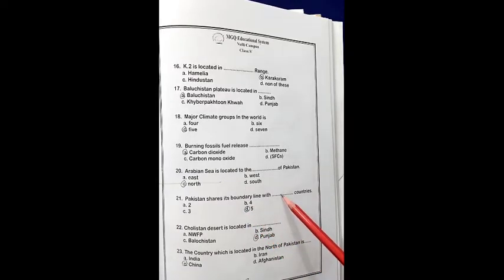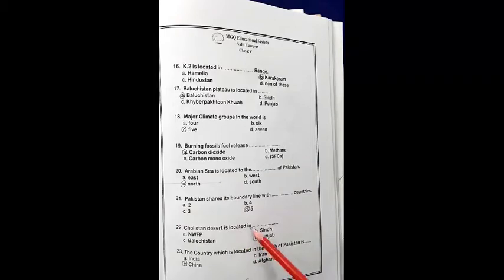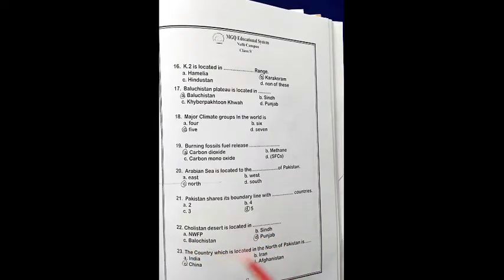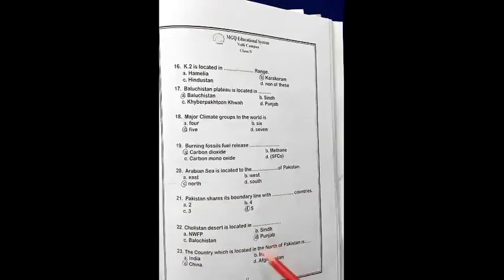22 MCQs. Cholistan Desert is located in dash. A, here we have NWFP. B, here we have Sindh. C, Balochistan. D, Punjab. NWFP, Sindh, Balochistan, Punjab. So Punjab, option D is correct.